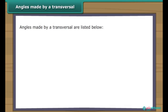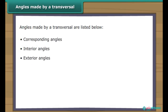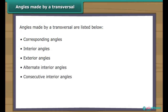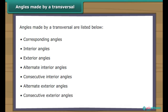Transversals form seven types of angles. They are described as corresponding angles, interior angles, exterior angles, alternate interior angles, consecutive interior angles, alternate exterior angles and consecutive exterior angles.